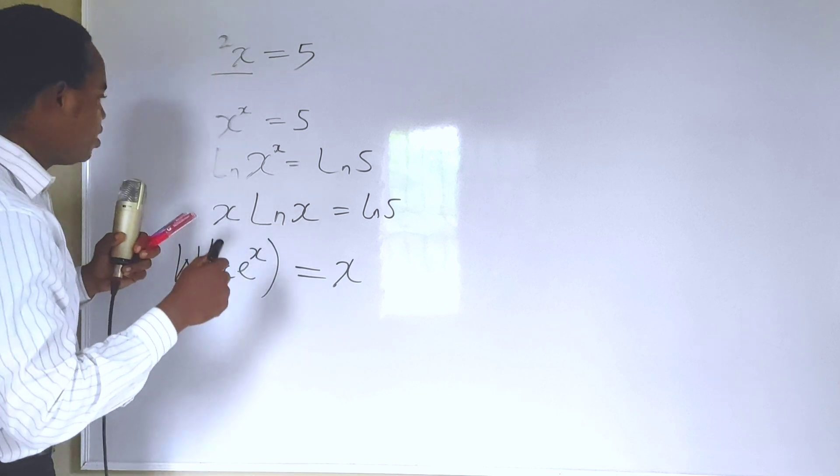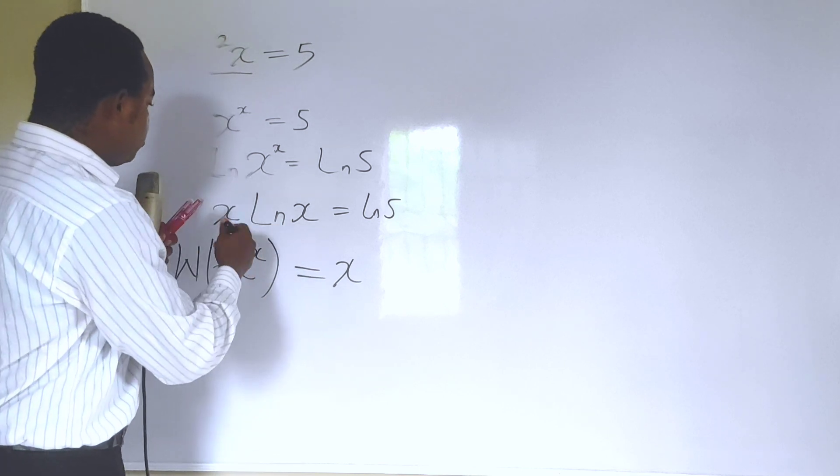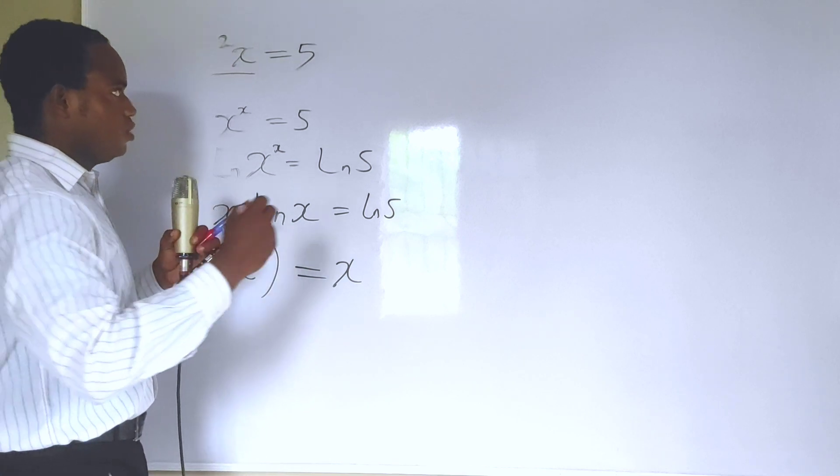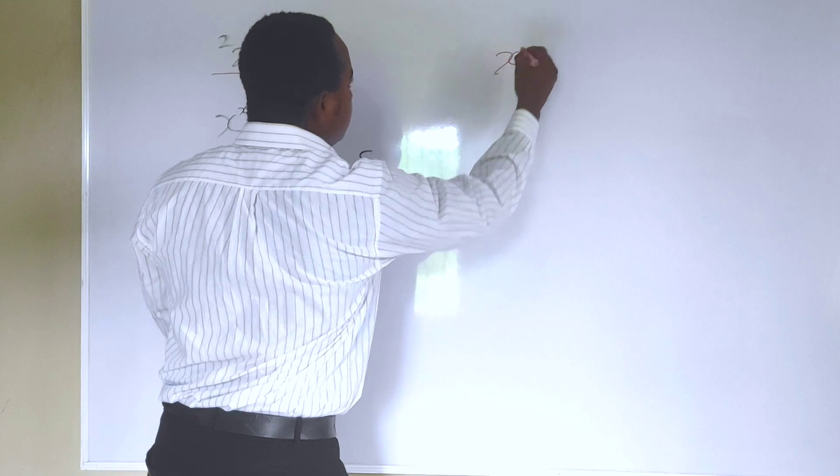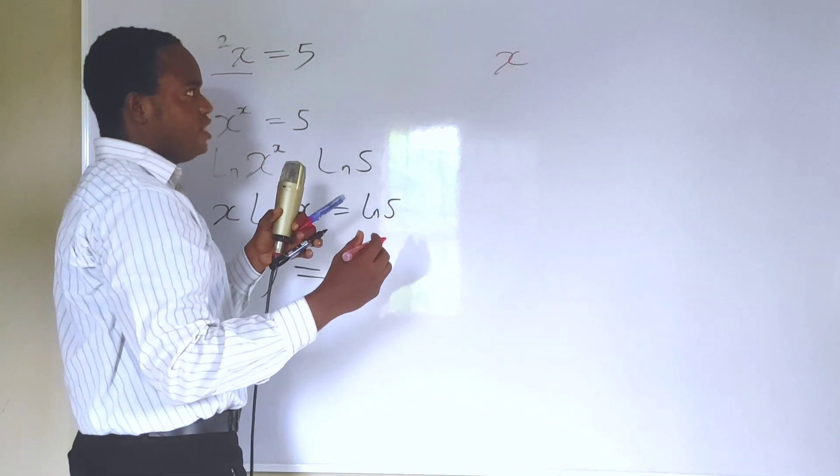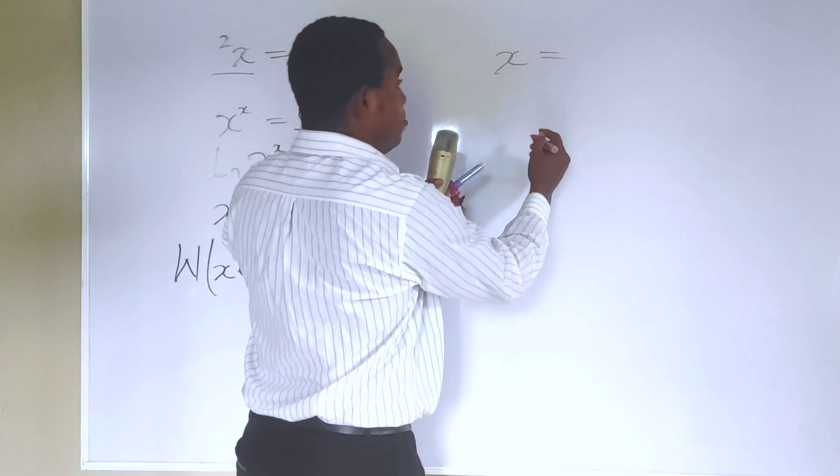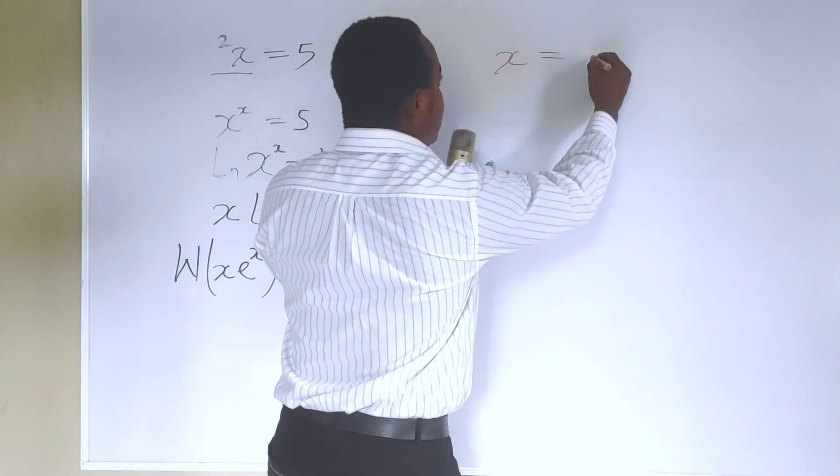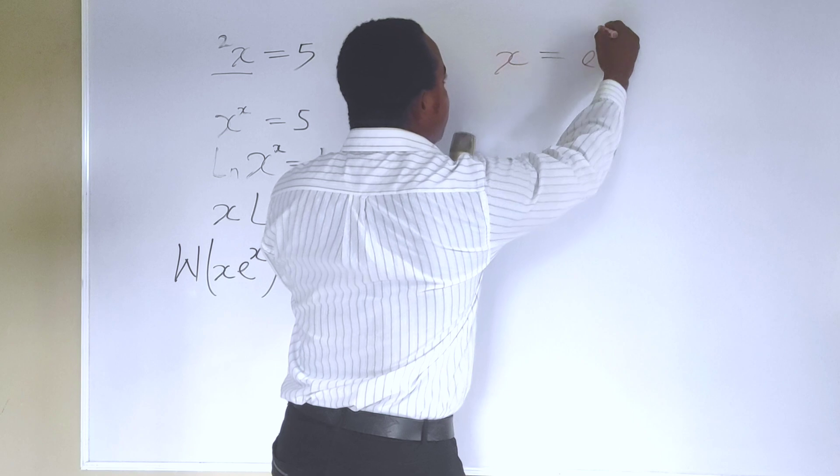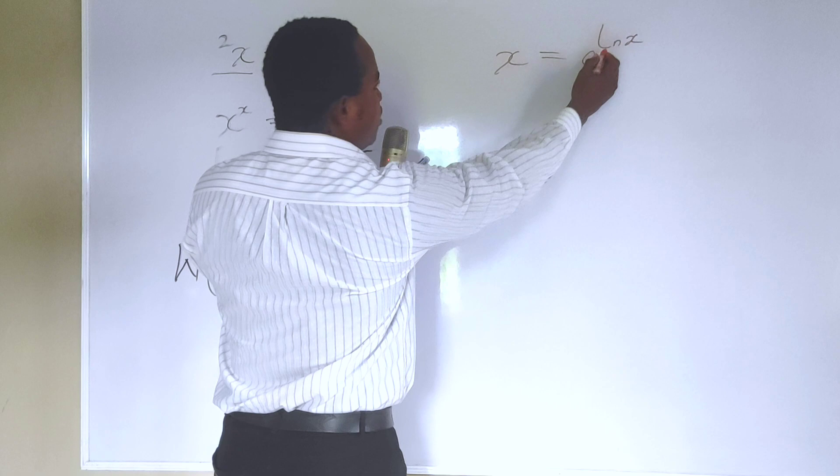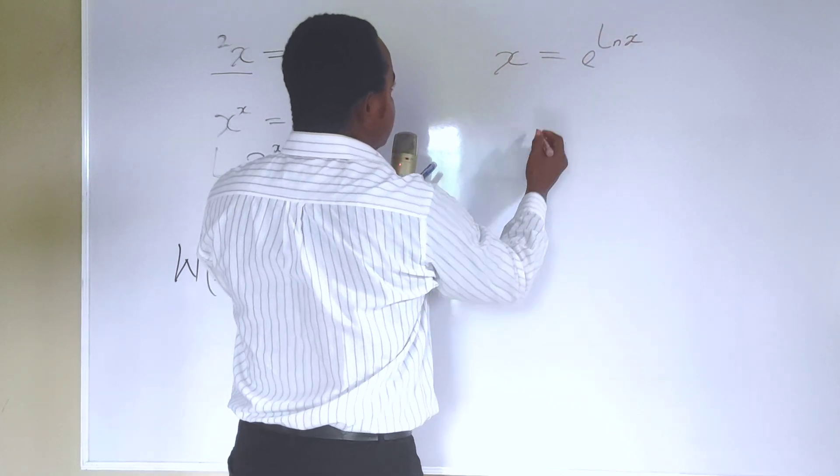There's something that could help here. When you have x, anything it could be, this is the same thing as taking the exponent of the natural log of x. If you take the exponent of the natural log of x, it gives you x. Let us make use of that here.